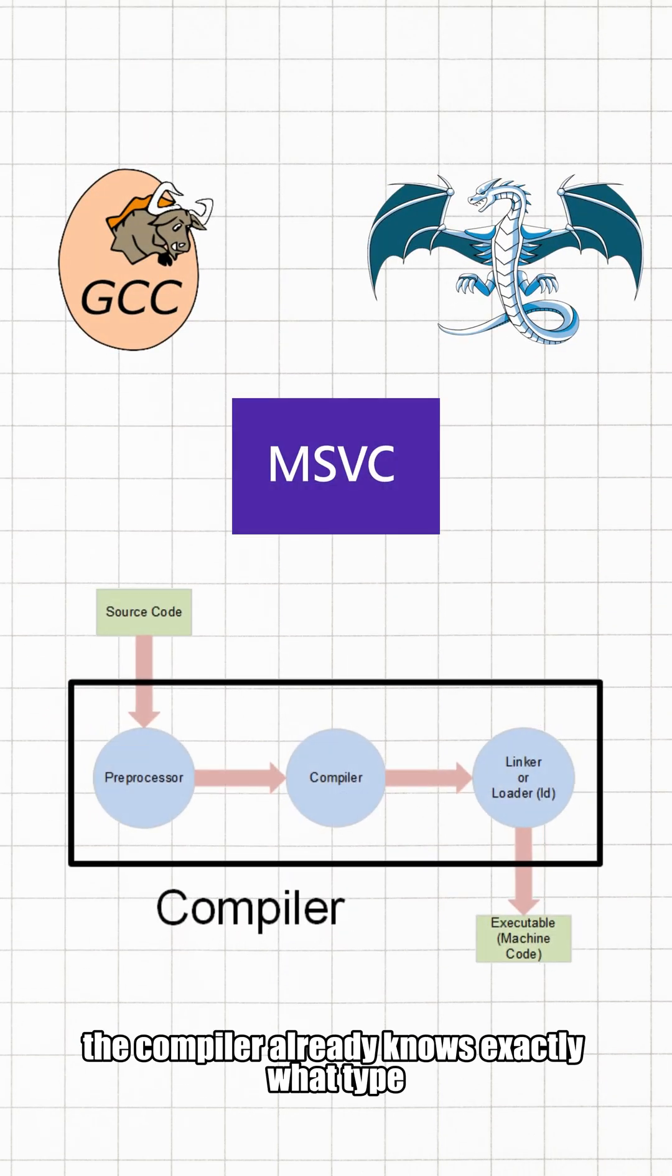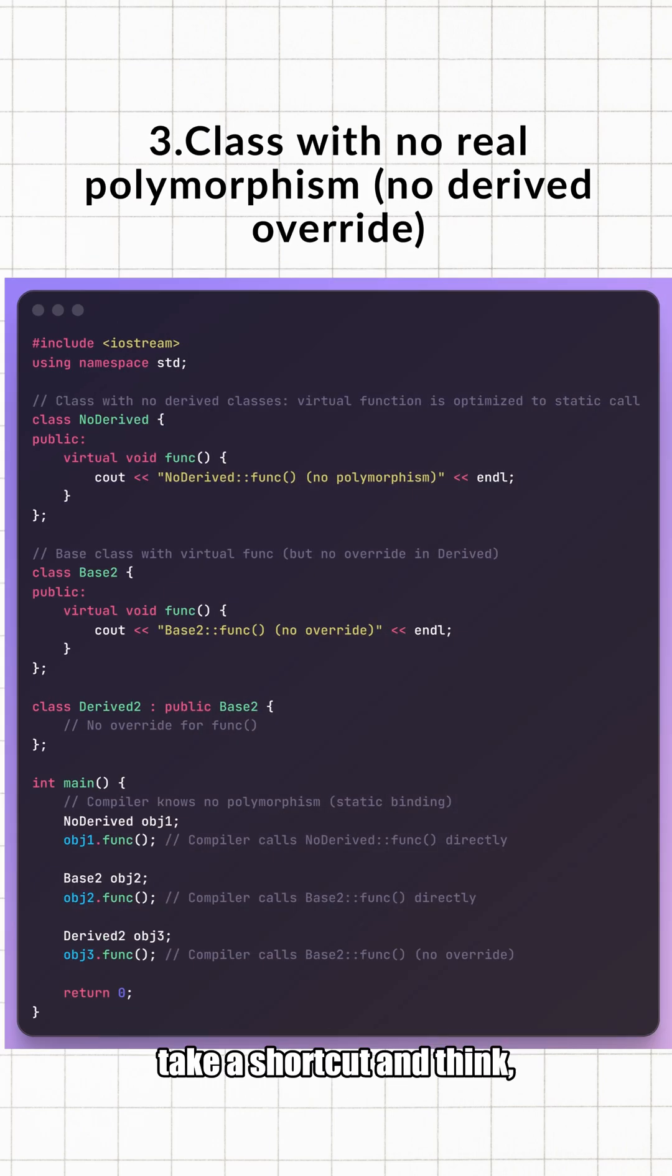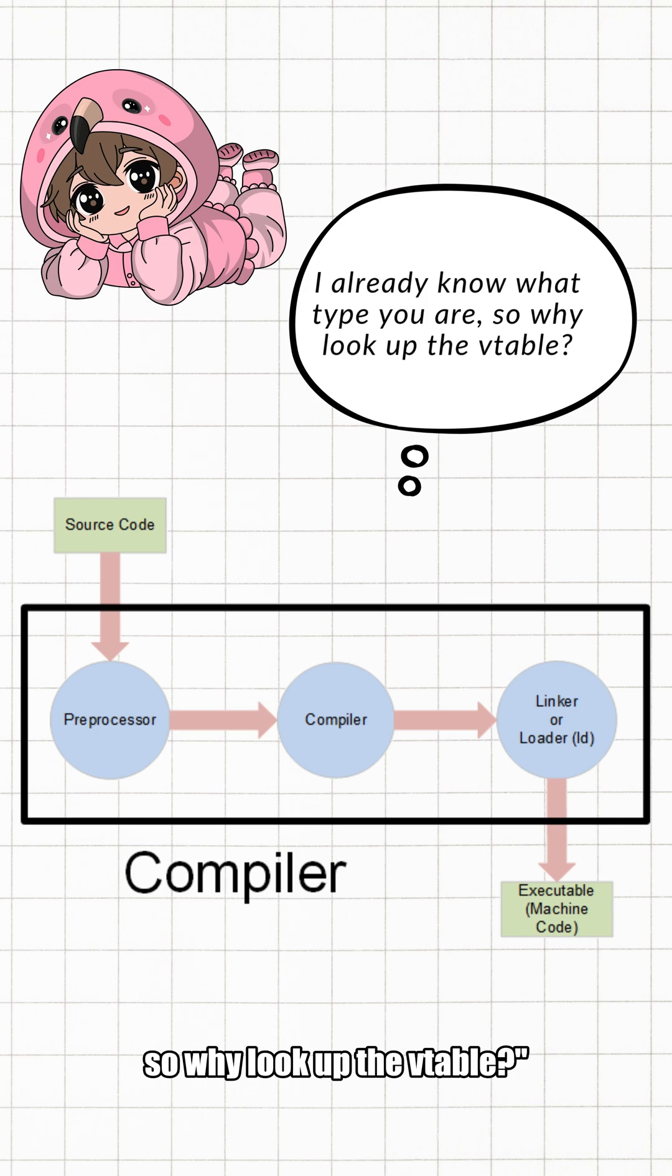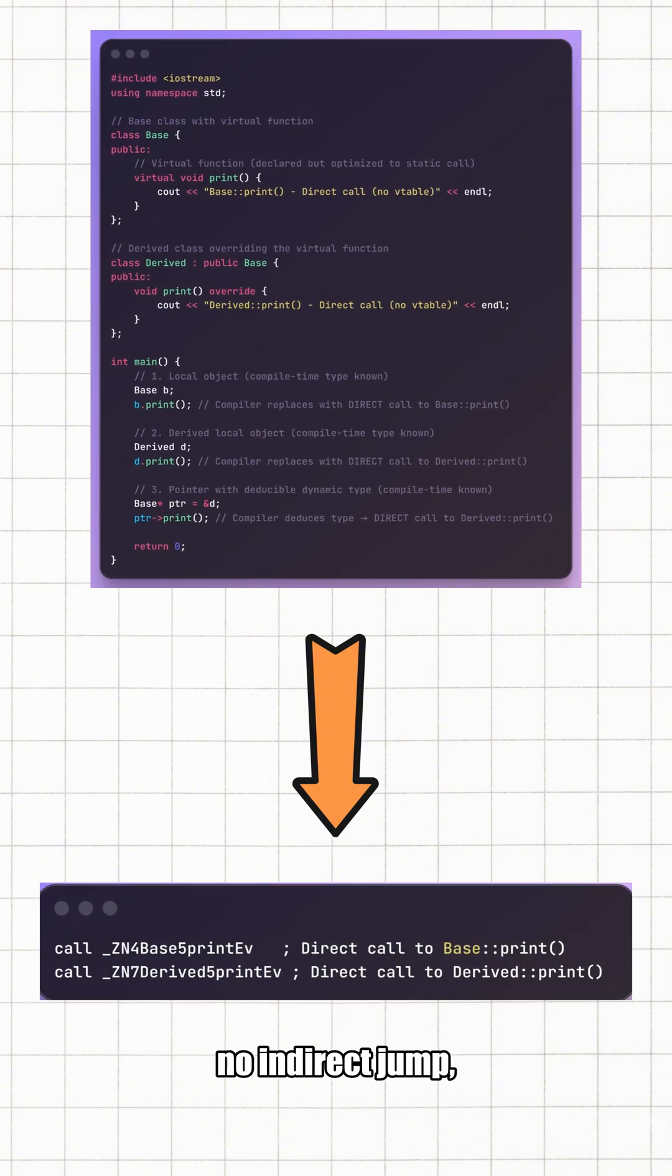Now here's the key point: in most real-world code, the compiler already knows exactly what type the object is at compile time. In some cases, the compiler will directly take a shortcut and think 'I already know what type you are, so why look up the vtable?' Thus, the virtual function call is directly replaced with a regular call instruction—no vtable lookup, no indirect jump, and even no risk of CPU branch misprediction.